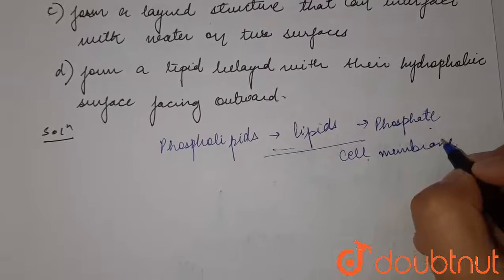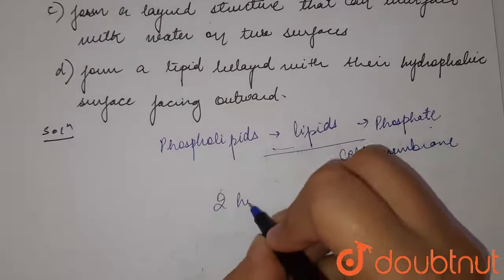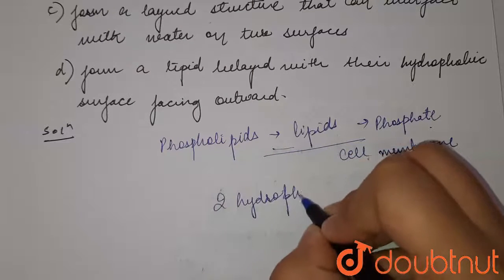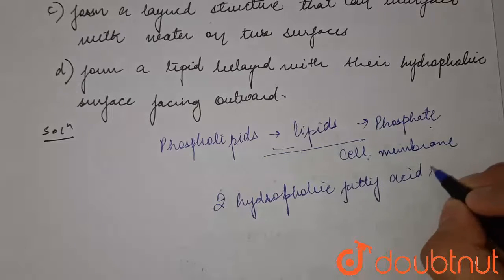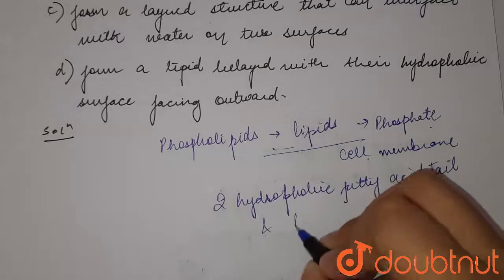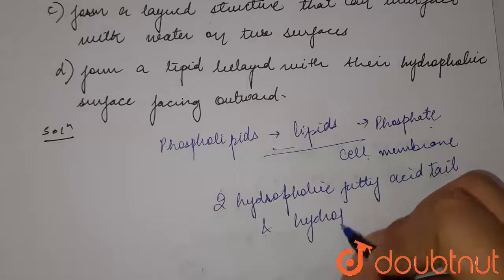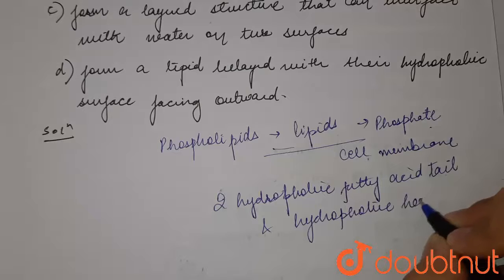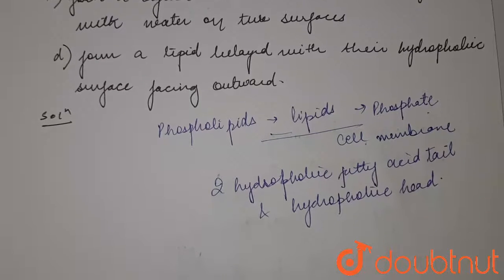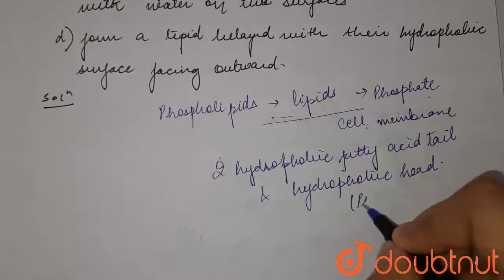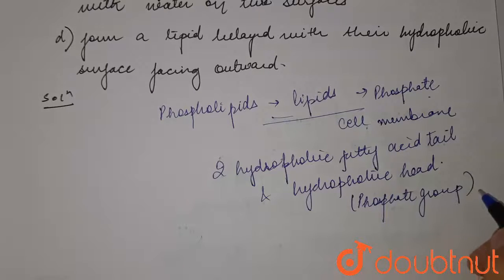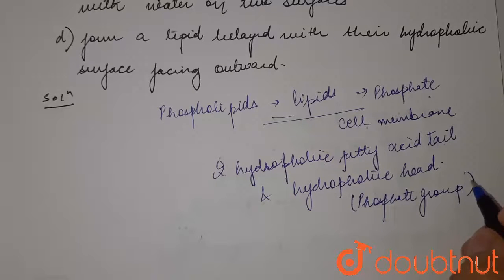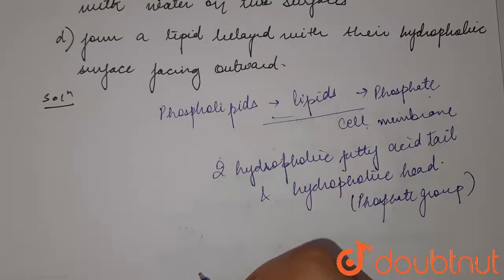It is made up of two hydrophobic fatty acid tails and a hydrophilic head. This hydrophilic head consists of the phosphate group. The two head constituents are joined by the glycerol molecule. So it can easily form a bilayer because of its amphiphilic nature.